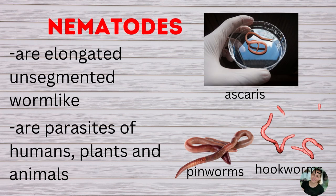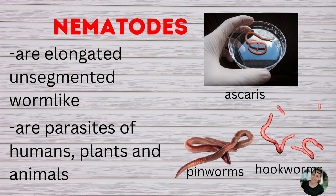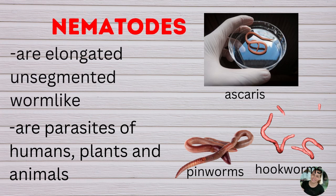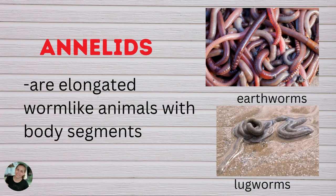Another group of invertebrates are nematodes. They are elongated and segmented worm-like animals. They are parasites of humans, plants, and animals. The last group of invertebrates are annelids. They are elongated worm-like animals with body segments. Some examples are earthworms and lugworms.